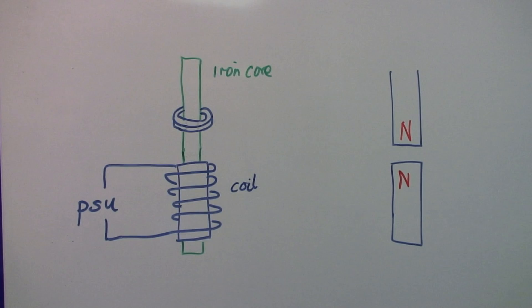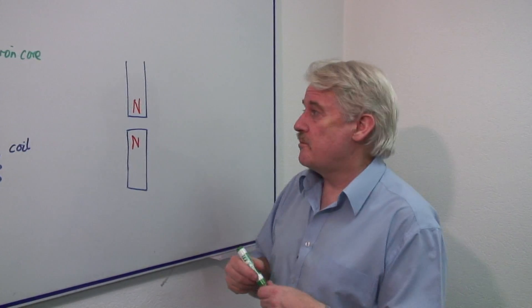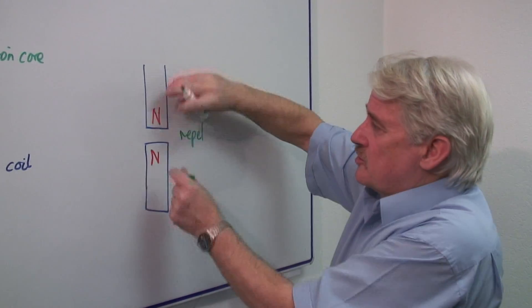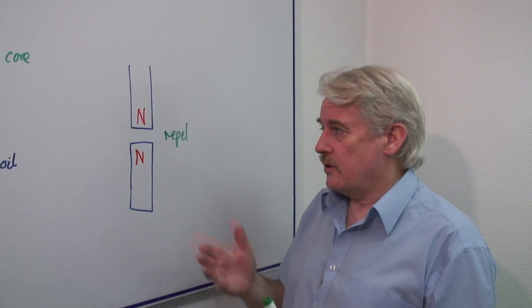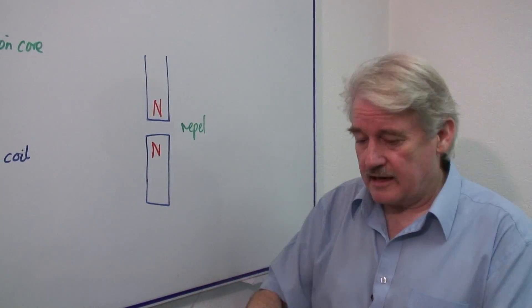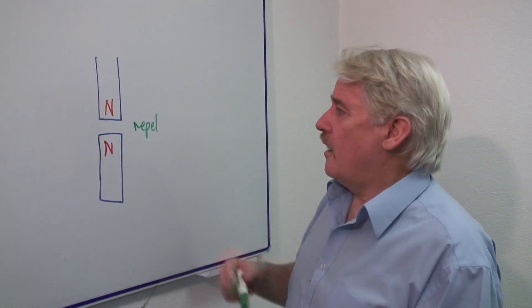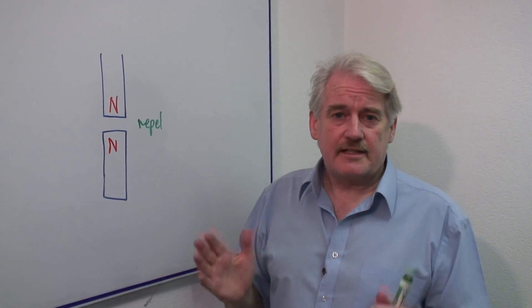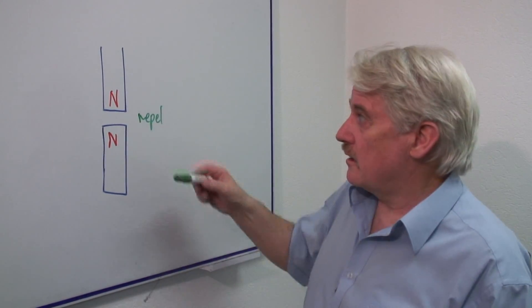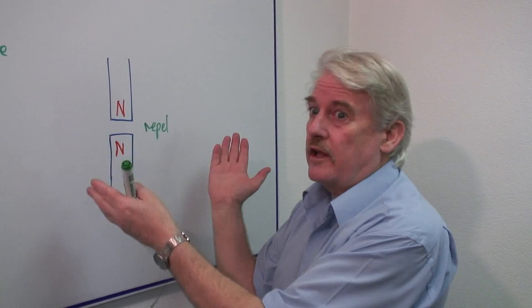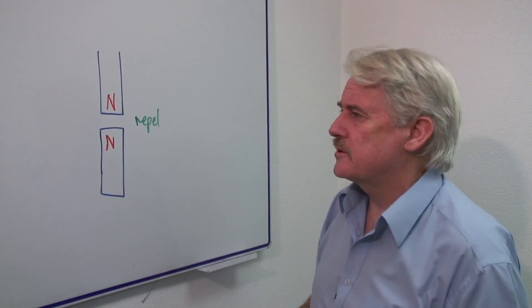Usually we use this idea that two identical poles will repel. So these two repel, that is they push each other apart. Now normally what would happen of course, if you place them side by side, they would push each other apart and stop. Obviously it can't levitate in that sense because there's nothing guiding it. There's nothing to stop it just falling over. So that's not really going to help us very much.